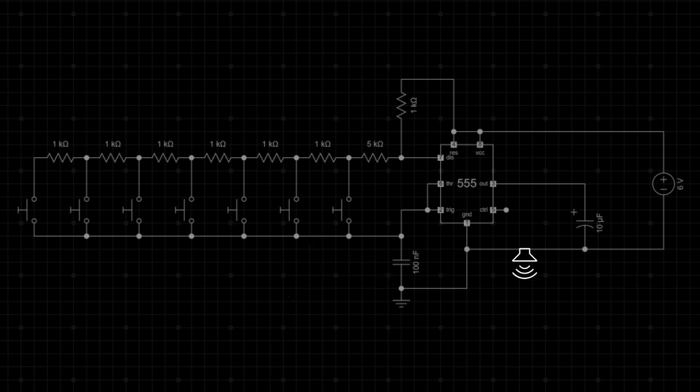When a switch is pressed, it alters the resistance in the circuit, changing the oscillation frequency of the 555 timer.